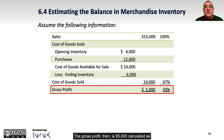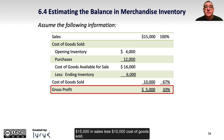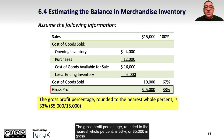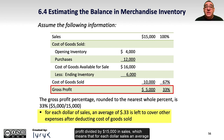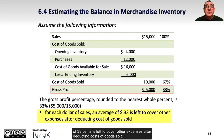The gross profit is $5,000, calculated as $15,000 in sales less $10,000 cost of goods sold. The gross profit percentage, rounded to the nearest whole percent, is 33%, or $5,000 in gross profit divided by $15,000 in sales, which means that for each dollar of sales, an average of $0.33 is left to cover other expenses after deducting cost of goods sold.